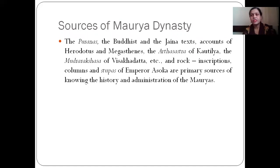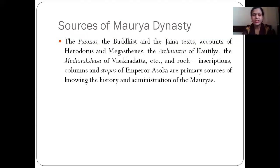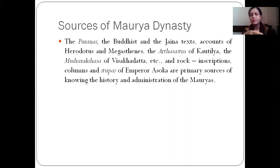The sources of the Mauryan dynasty, which is the biggest and first dynasty in India — to understand it, the Puranas, the Buddhist and Jain texts, the account of Herodotus, Megasthenes, the Arthashastra of Kautilya, and the Mudrarakshasa of Vishakadatta are some written sources which give detailed information about the Mauryan rulers, their administrative system and political extension of that period.